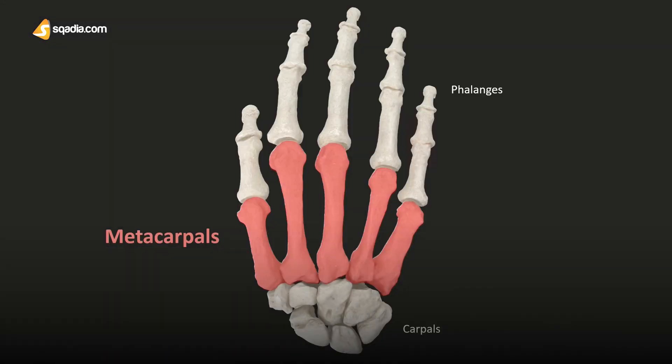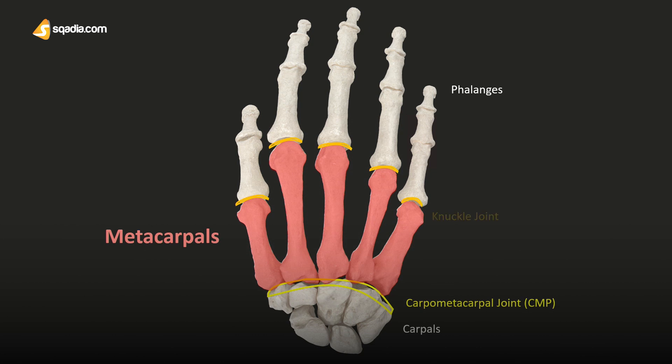The metacarpal bones form the carpometacarpal joint where they are connected to the carpal bones of the wrist proximally, and form the metacarpophalangeal joint where they combine with the phalanges of the fingers distally. The metacarpophalangeal joint is commonly referred to as the knuckle joint.